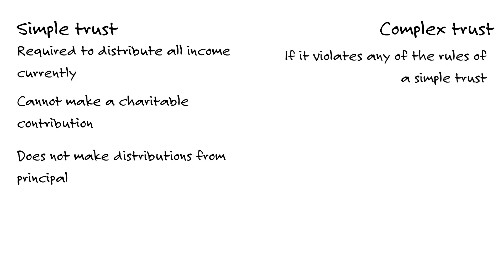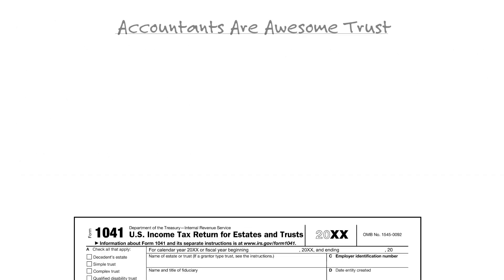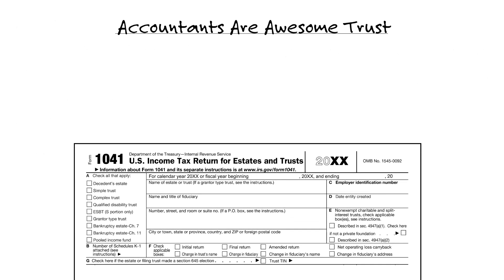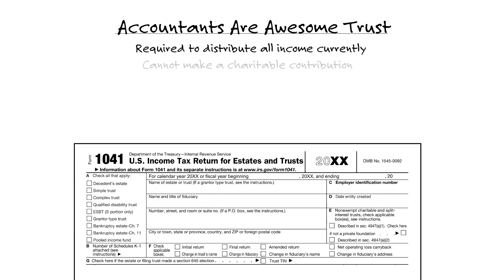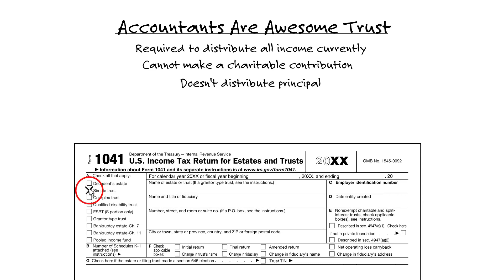Assume for the next four scenarios that you are preparing the tax return for the trust discussed and must determine the type of trust it is. The Accountants Are Awesome Trust is considered a simple trust because it is required to distribute all income currently, it cannot make a charitable contribution, and doesn't distribute principal. If it were to make a distribution in excess of the income, then it would be considered a complex trust, but in this case it's a simple trust.